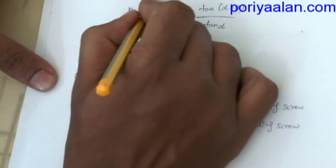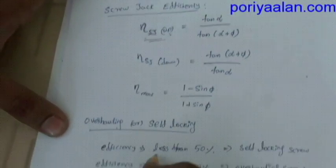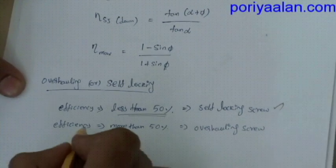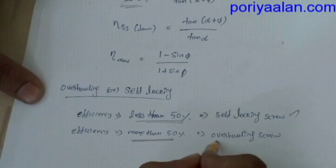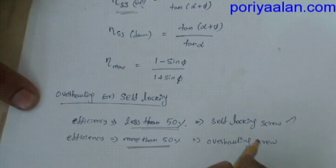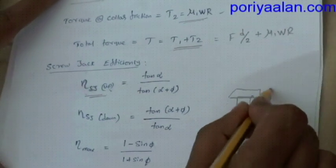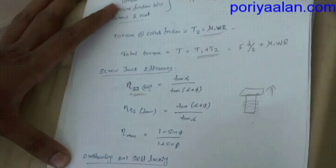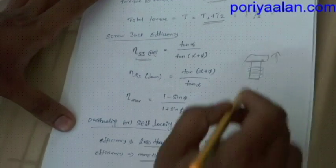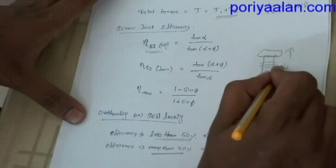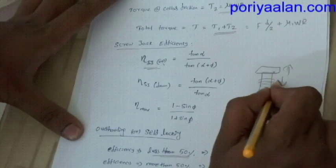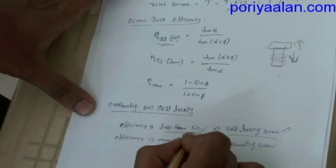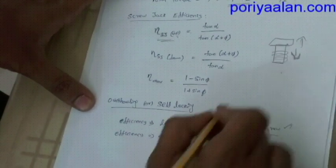If you calculate the upward efficiency and it is less than 50%, that is called a self-locking screw. If it is greater than 50%, that is called an overhauling screw. For example, if you load the weight and it automatically lowers, that is called an overhauling screw. If it stays in place, that is called a self-locking screw. If efficiency is less than 50%, it will be a self-locking screw.